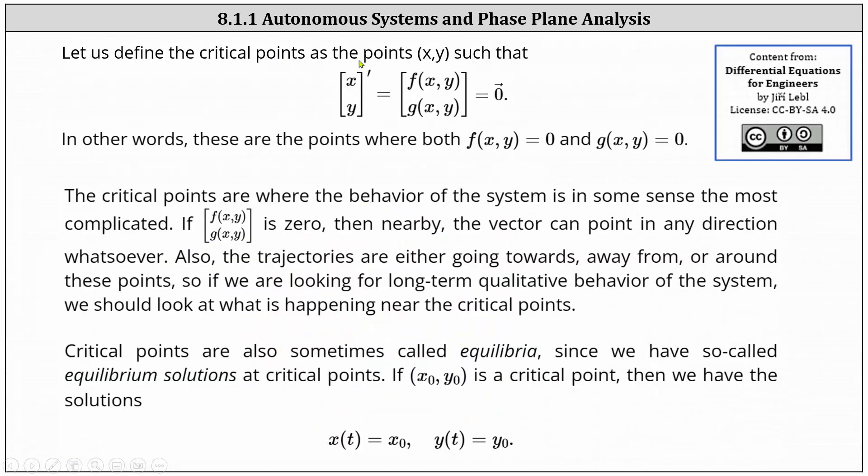The critical points are the points (x,y) such that the derivative of the vector [x,y] is equal to the vector [f(x,y), g(x,y)] equals the zero vector. In other words, these are the points where both f(x,y) and g(x,y) equals zero. It's important to notice here they both must be zero in order for (x,y) to be a critical point.